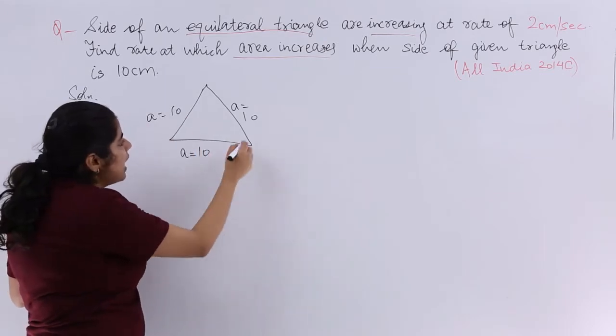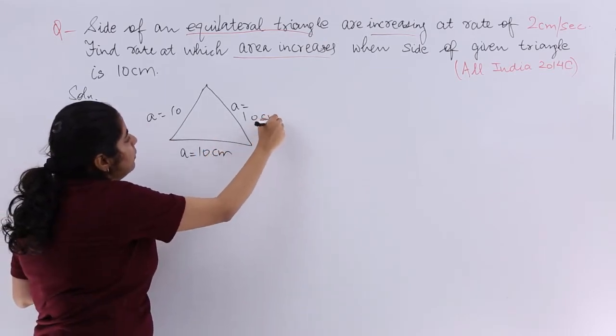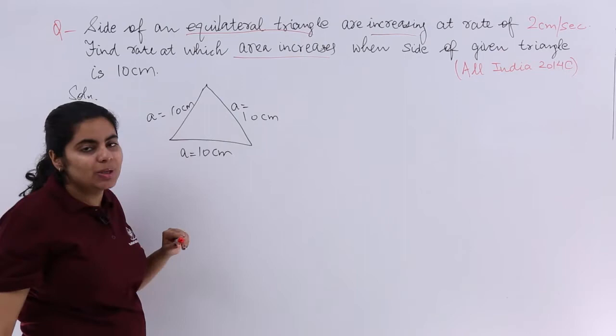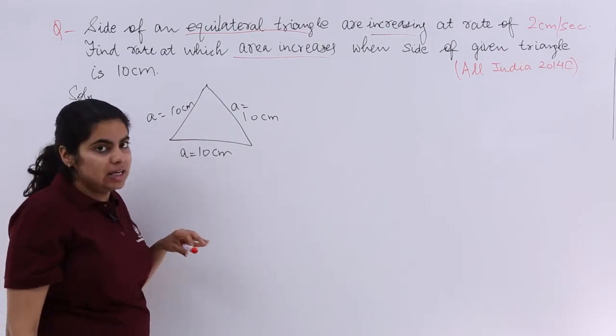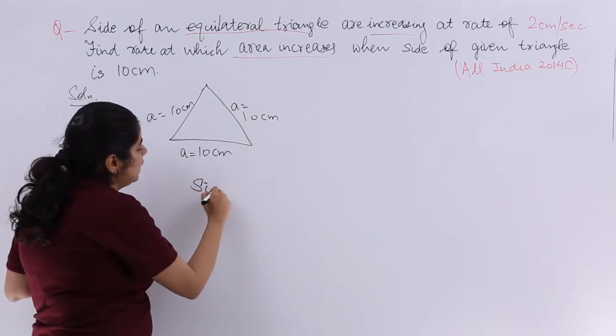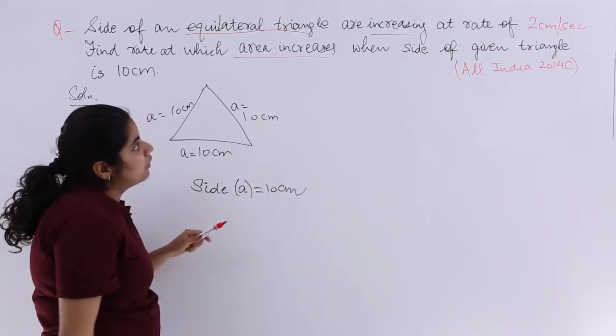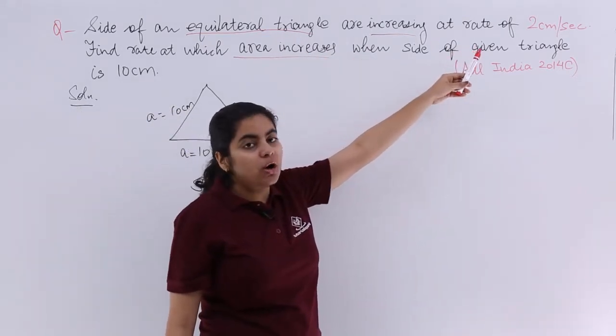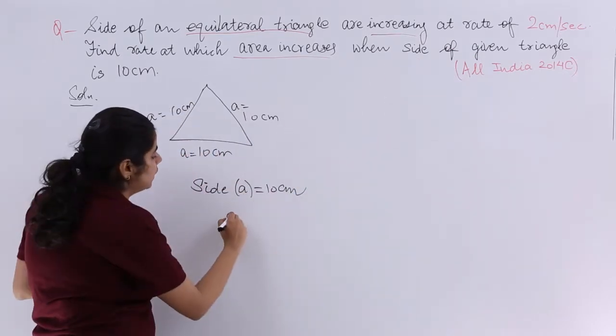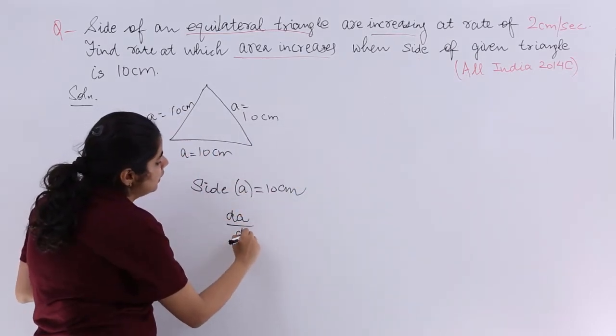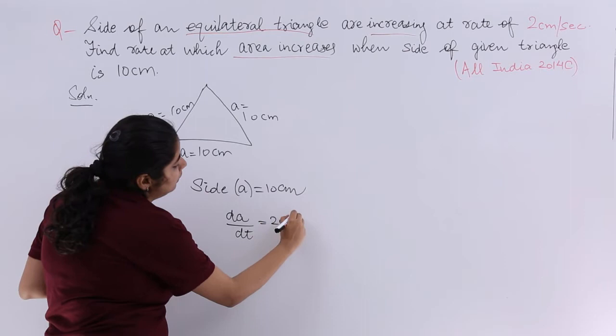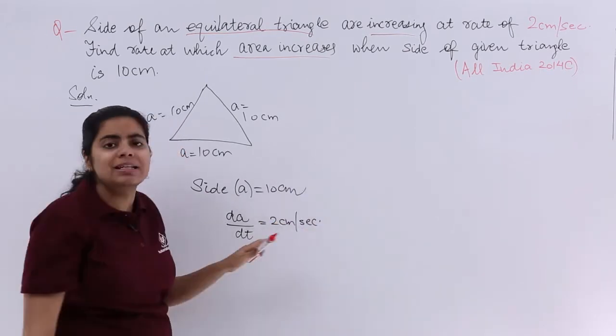definitely I have a is equal to 10 cm. The first thing that I know about this triangle. The other thing, the rate of change of that side, the rate of increase is da upon dt and that is equal to 2 cm per second. That is given to me. That is very important.